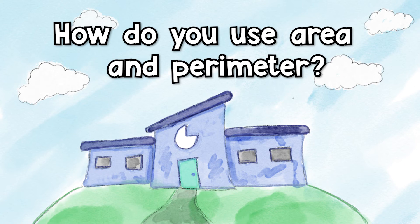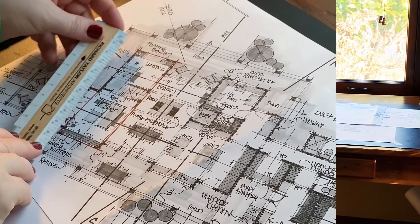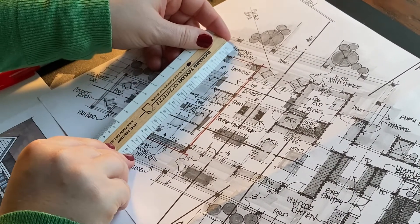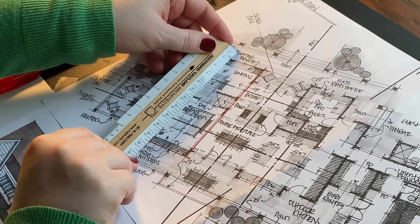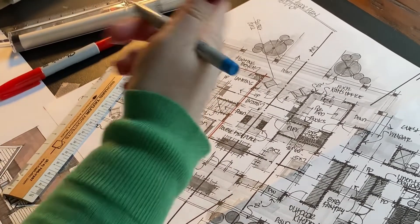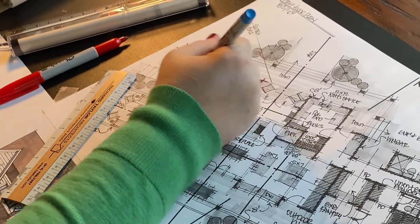How do you use area and perimeter? I always use area and perimeter when designing an addition or doing a custom home. It's always important to understand the size of the structure that you're building — for cost reasons, but also just to know exactly how much space you have and how much you need.